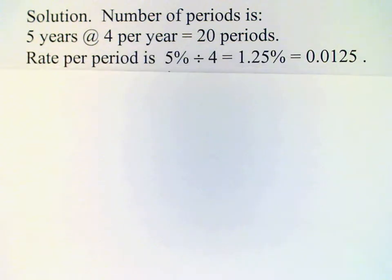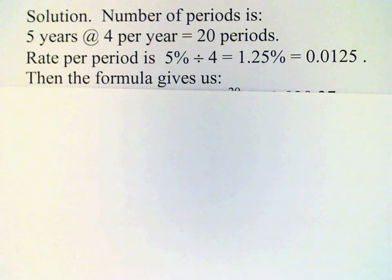The rate per period we get by dividing the annual rate by the number of periods per year. So we divide the 5% by 4 and get 1.25% or 0.0125 converted to a decimal.